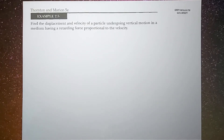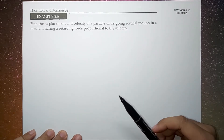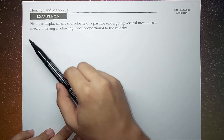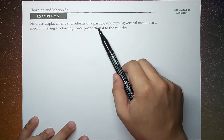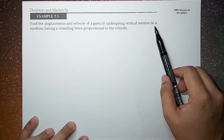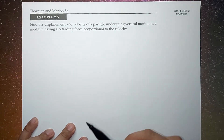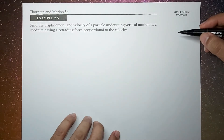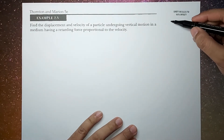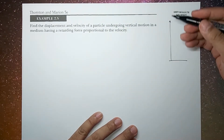What's up guys, it's me Sir Ernest, and today we're going to solve example 2.5 of Thornton and Marion fifth edition. The problem reads: find the displacement and velocity of a particle undergoing vertical motion in a medium having a retarding force proportional to the velocity. Here, unlike example 2.3, the object is now moving along the vertical.